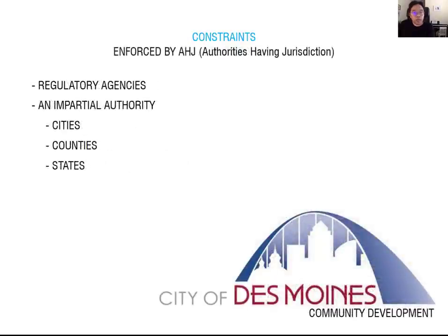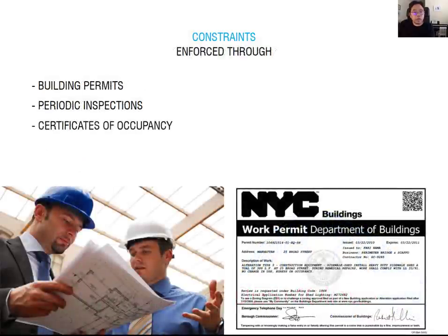Most cities, counties, and states have their own department to handle building code and planning issues. The building code, zoning regulation, and building permit are enforced by AHJ — Authorities Having Jurisdiction — which is found mostly at the city level. The city usually controls the building permit and city regulation. To construct your project, you must have a building permit. Without the permit, you cannot construct your project on the site. You have to get the building permit from the city first.